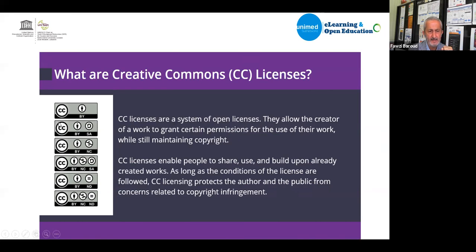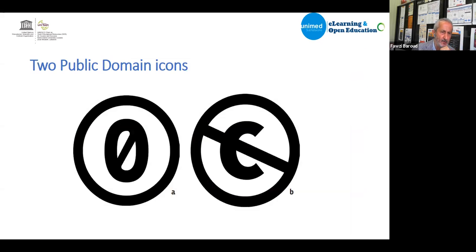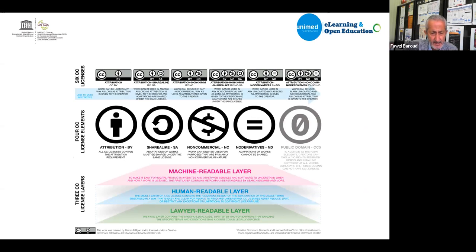Combining those four conditions creates the six CC licenses: CC BY (the most open), CC BY-SA, CC BY-NC, CC BY-NC-SA, CC BY-ND, and CC BY-NC-ND. There are also two additional icons — CC0 and the public domain mark — which indicate a resource is in the public domain.